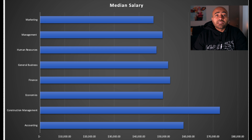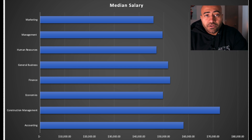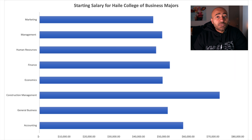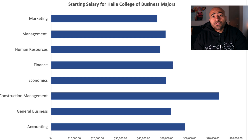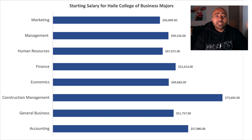So let's check out this example. Here we have a list of starting salaries by majors for the Hale College of Business at Northern Kentucky University. This is an ugly graph. To make it pretty, we will follow these steps: Step 1, remove the background. Step 2, remove grid lines. Step 3, remove gradient fill and replace it with a solid color. Step 4, get rid of the x-axis and replace it with data labels at the end of the bars.